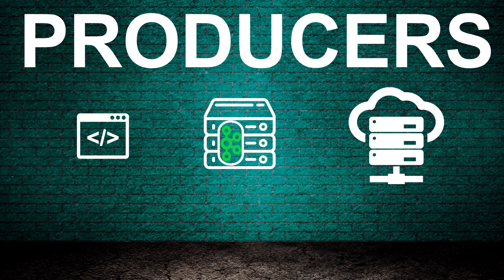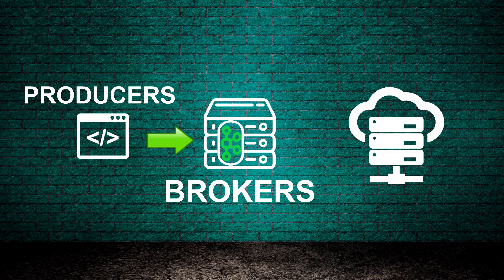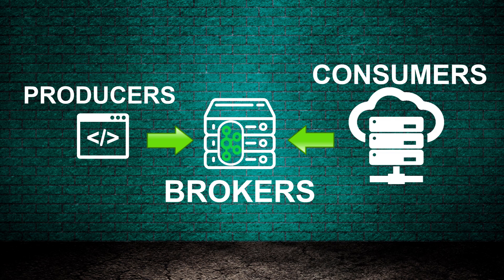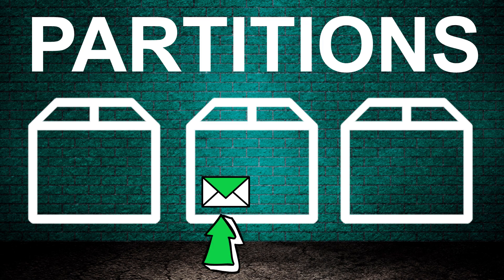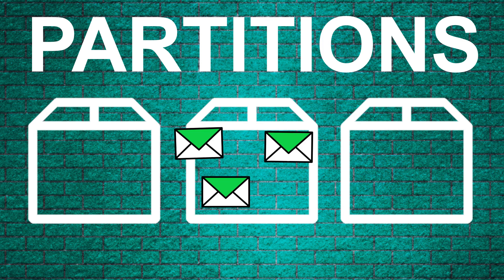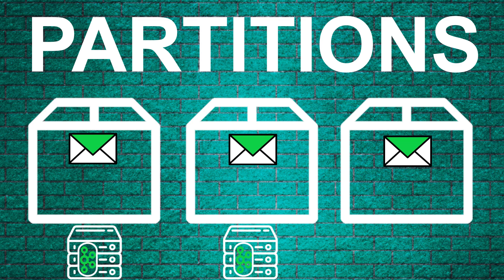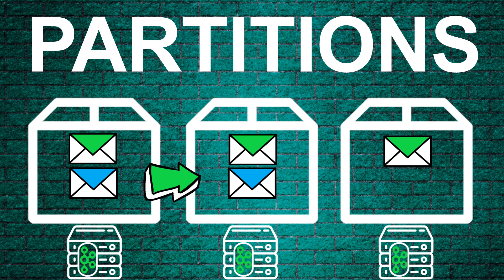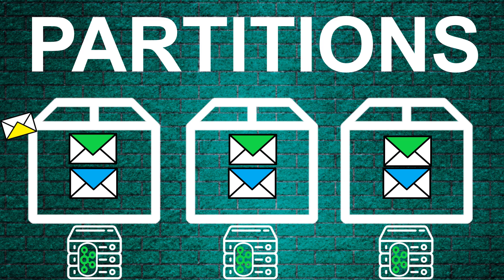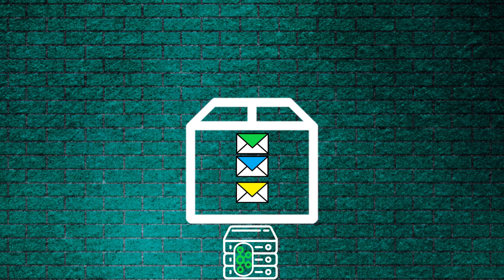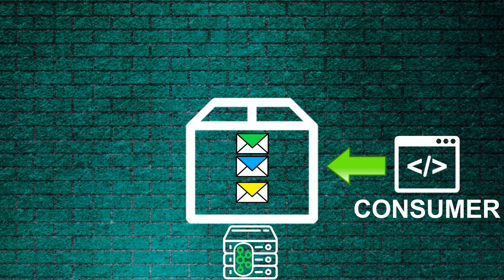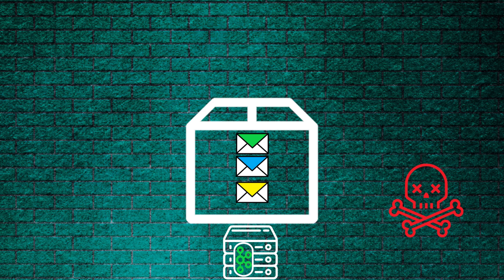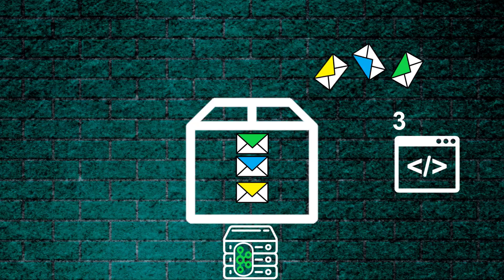In Kafka, clients are called producers. Messages go to brokers, which are Kafka instances. Servers that consume messages are called consumers. Messages are stored on the broker in what's called a topic. Topics can be divided into partitions, and messages go into a partition — this allows scalability as we can store copies of a message on separate brokers in different partitions. If a broker dies, messages are not lost. The consumer subscribes to the topic, receives messages in order with an index number, and if the consumer fails it can use the index to retry and continue where it left off.